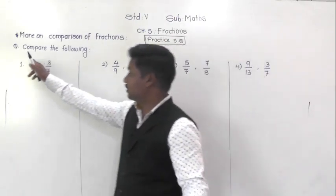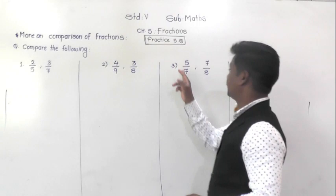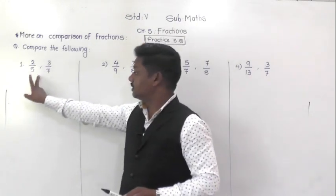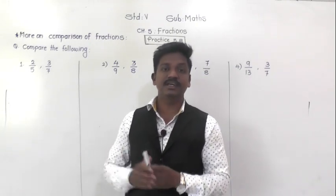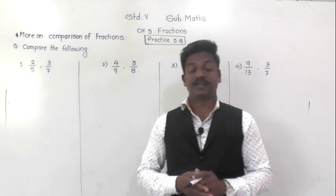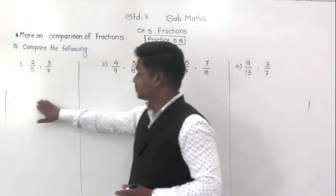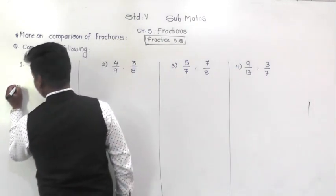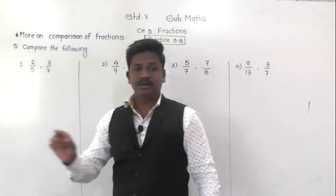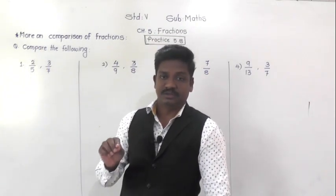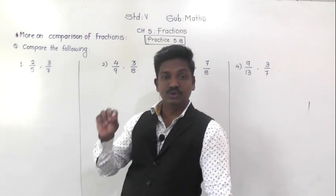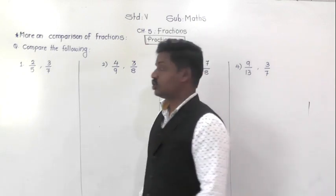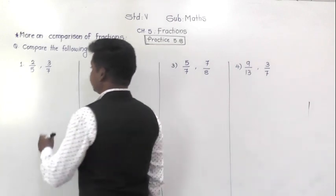Now observe these fractions: 2/5 and 3/7, 4/9 and 3/8, 5/7 and 7/8. In all these examples, the numerators and denominators are not the same. So how do we compare them? We are going to use the cross multiplication method — the same method we used while checking equivalency of fractions.